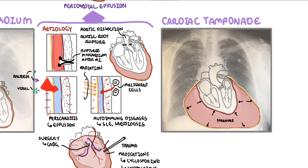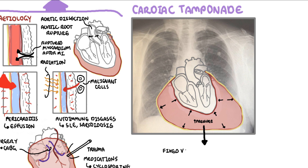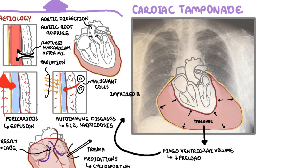Going over the pathophysiology: when there is an increase in fluid in the pericardial space, there is increased pressure against all four chambers of the heart, including the two ventricles. This means the ventricles cannot expand during diastole — they have a fixed ventricular volume, meaning the preload is reduced, which is the amount of blood returning to the heart. As a result, cardiac tamponade causes an impairment of right ventricular filling, causing signs of right-sided heart failure, including elevated jugular venous pressures, pedal edema, and ascites.